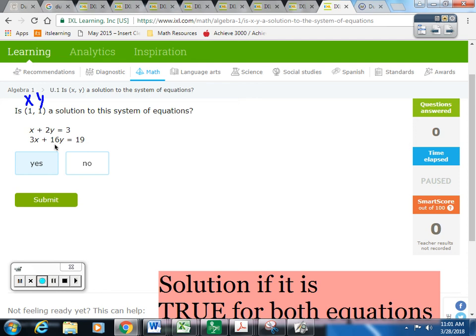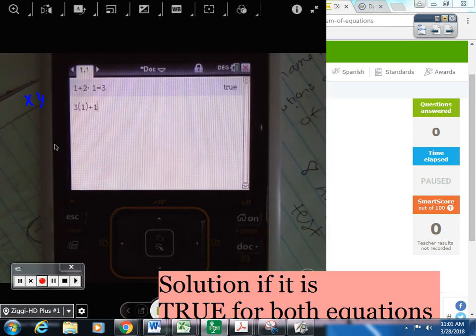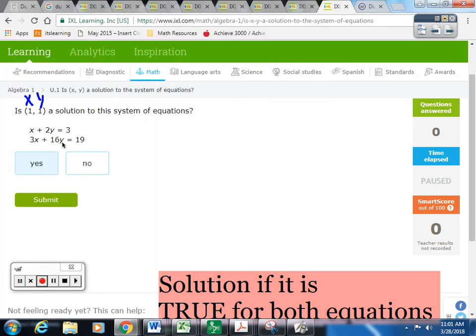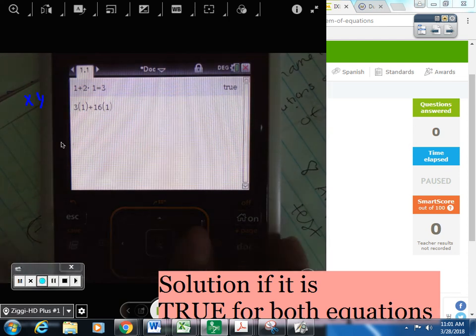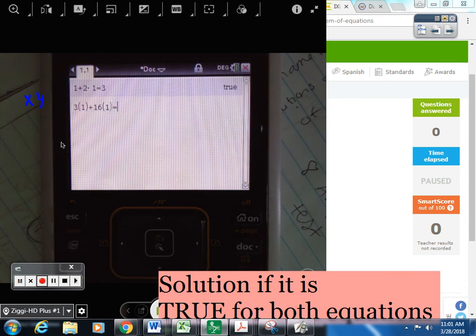One sixteen. Don't put y, one. One, okay. Perfect, okay. Close out of that, equals nineteen.